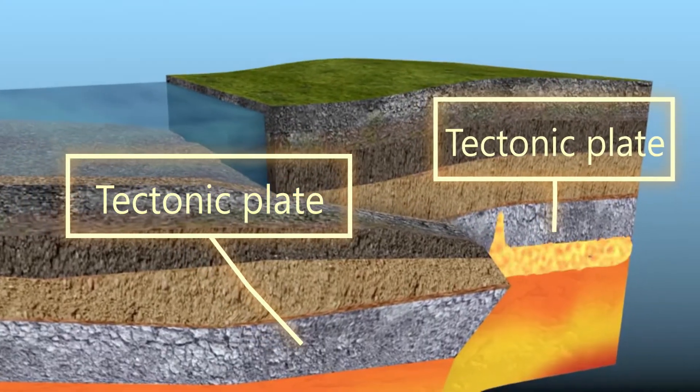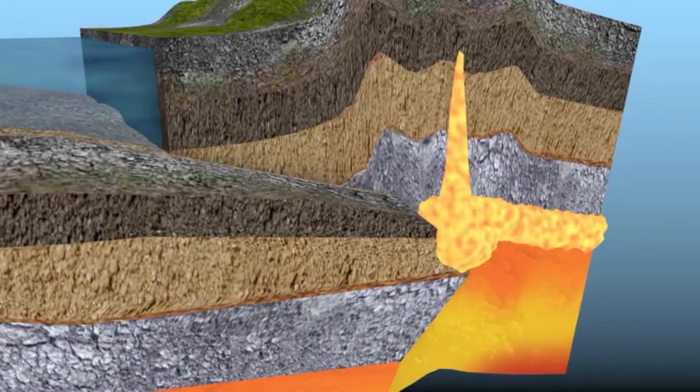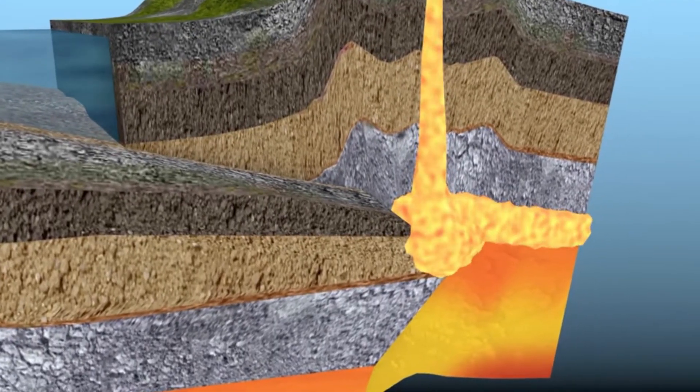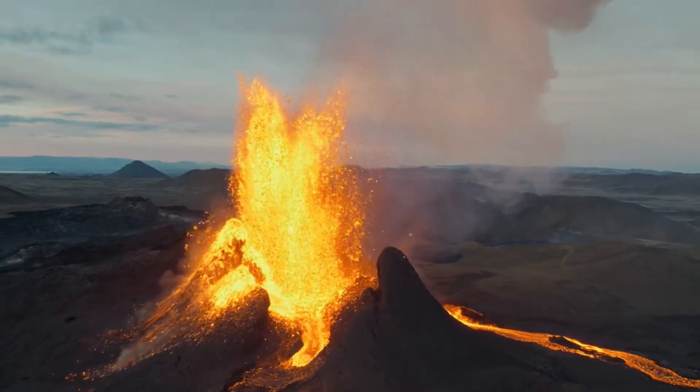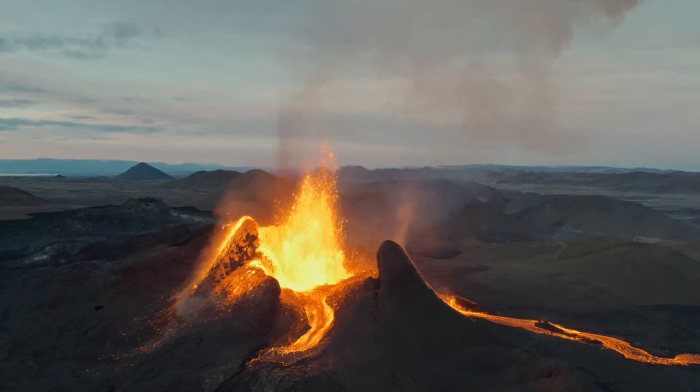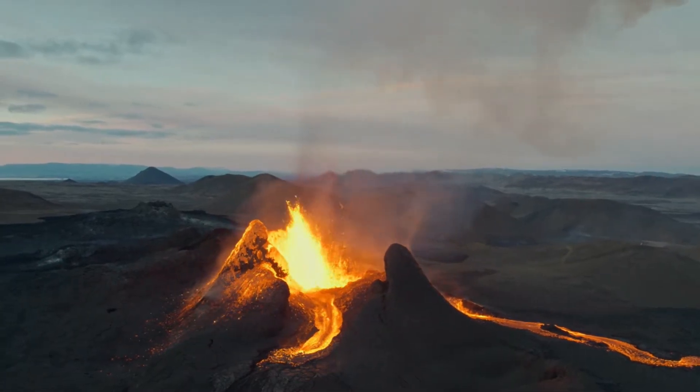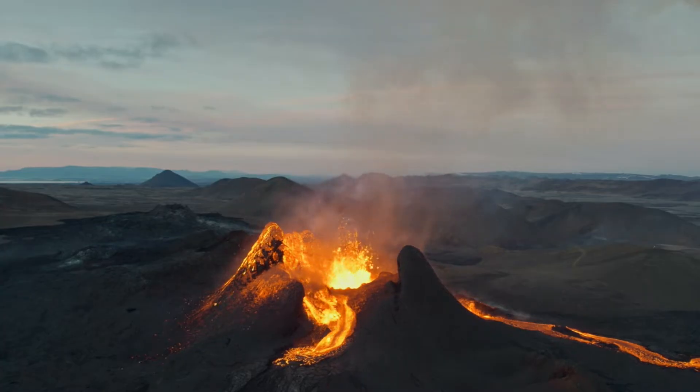The goal of this video is to summarize the leading current theories to answer that question. In order to do that, we first need to know a little more about the Earth's interior. An active volcano is like a window into the Earth's interior. We cannot see far into the Earth, but scientists have used other instruments to make observations and have theories for what they think is inside the Earth.